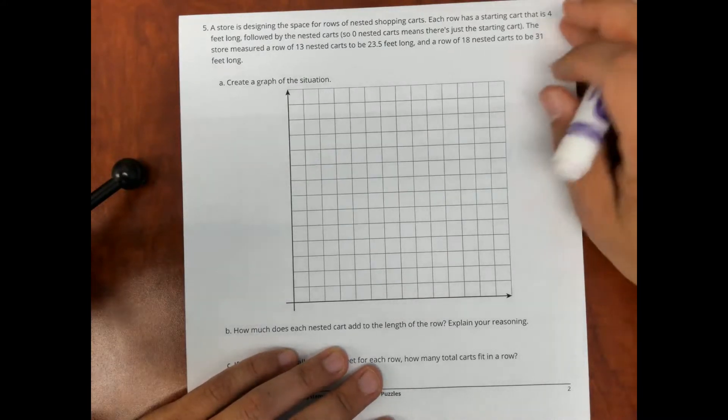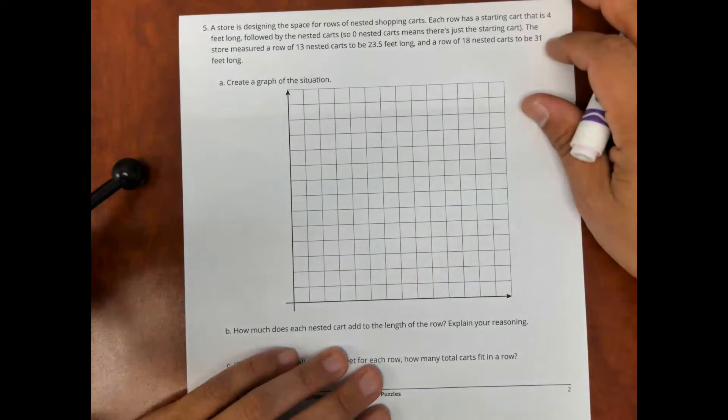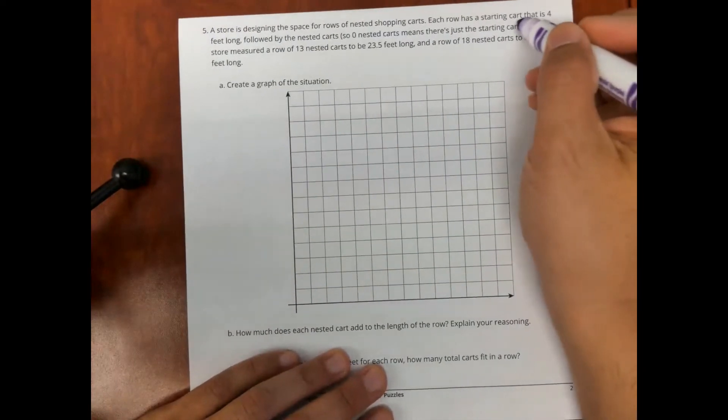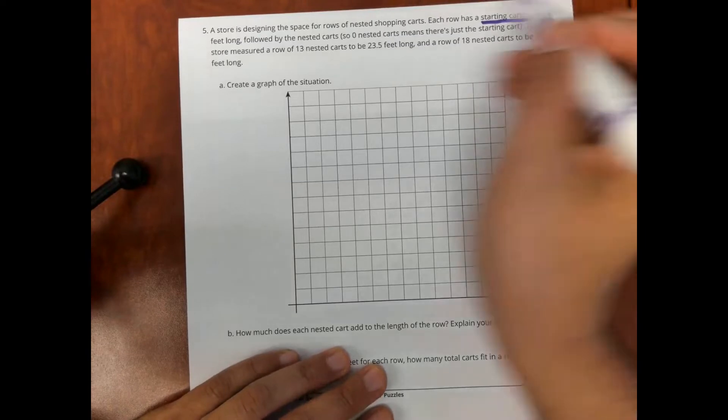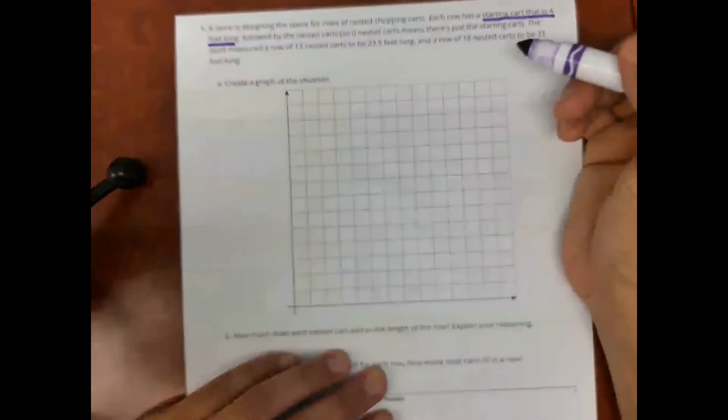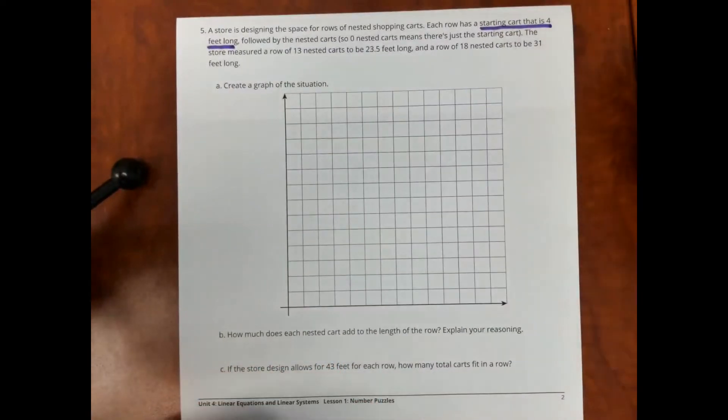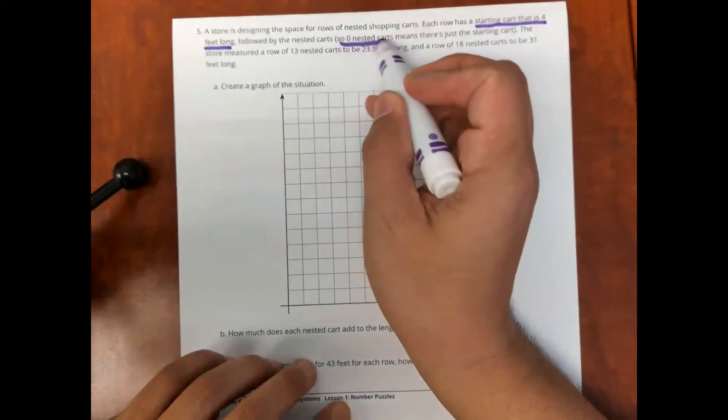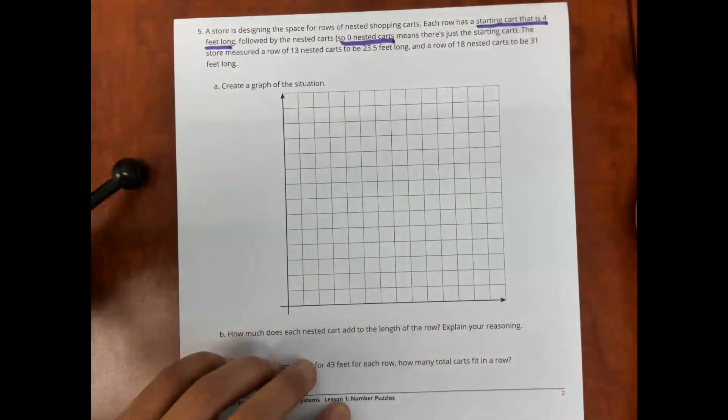So now this problem is one like we did with the cups, and that is because a starting cart is 4 feet long. Because of that starting cart, every cart is going to add the same amount, but it's just not starting at 0. So, this is saying 0 nested carts means that there's already 4 feet.